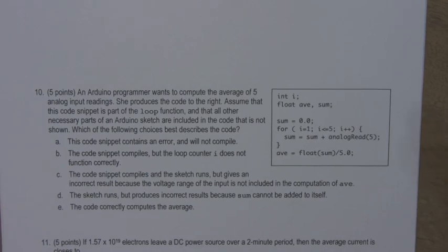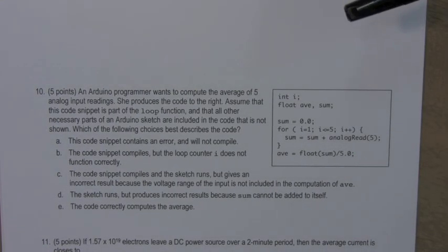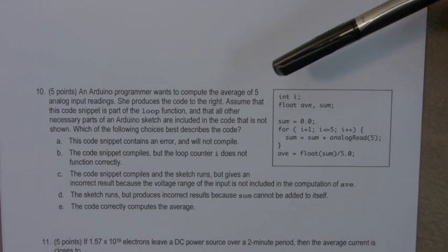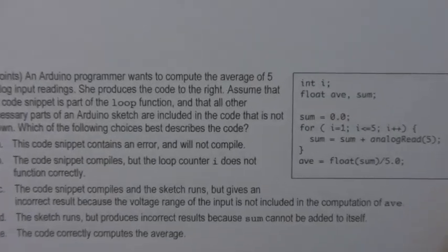Problem 10. A lot of words to read. An Arduino programmer wants to compute the average of five analog input readings. She produces the code to the right, this chunk here. Assume this code snippet is part of the loop function and that all other necessary parts of an Arduino sketch are included in the code that is not shown. Which of the following choices best describes the code? Let's zoom in and have a look at the code for a second. Concentrate on what's going on there.